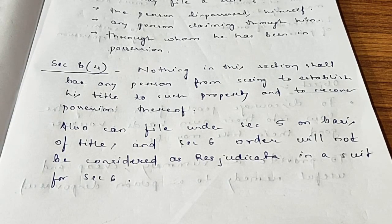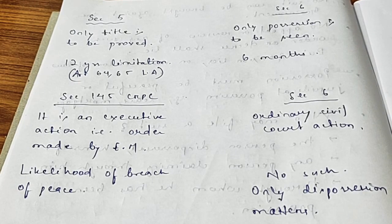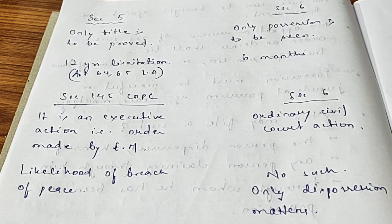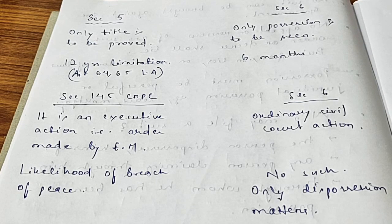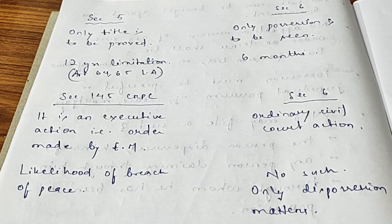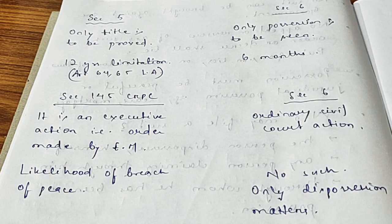Under Section 5, one who has the better title to the property will get the benefit of possession — only title is to be proved. But under Section 6, only the possession is to be examined by the court: whether the person who has brought the suit has been dispossessed, and whether the dispossession was otherwise than in due course of law. The limitation period under Section 5 is 12 years from the date of dispossession, as implied by Articles 64 and 65 of the Limitation Act, whereas under Section 6 the limitation period is 6 months from the date of dispossession.